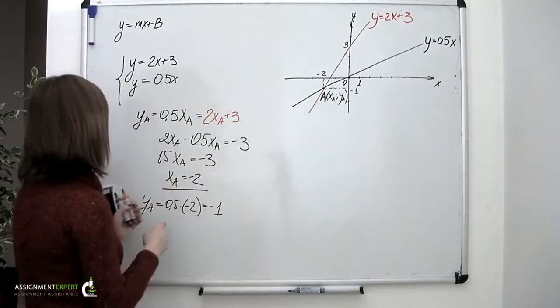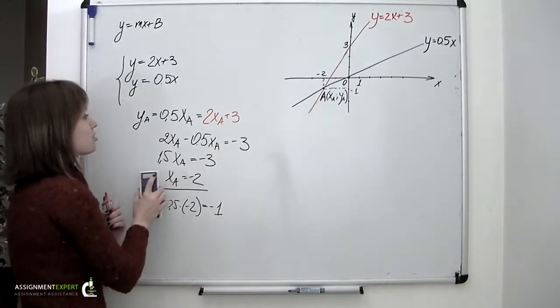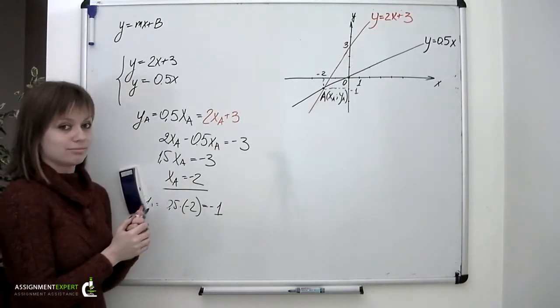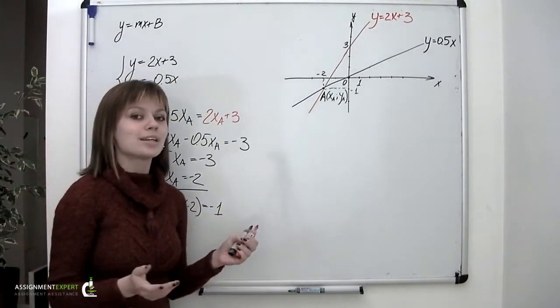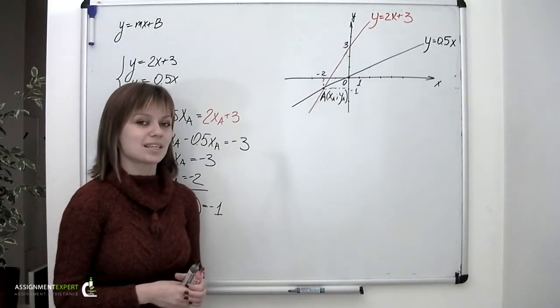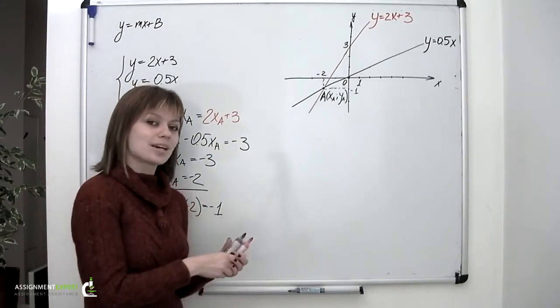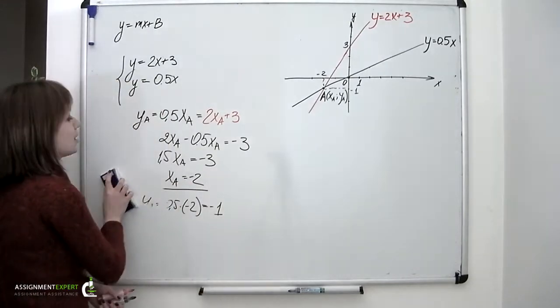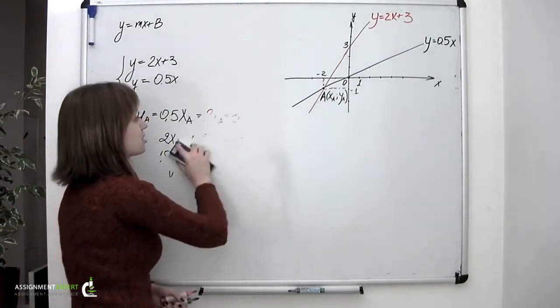As a matter of fact, a system of such equations may have no solutions at all. Which is natural, because two lines on a plane won't necessarily intersect. They might coincide or go parallel as well. So let's have a look at a couple of examples.